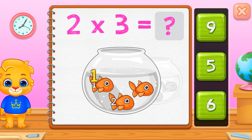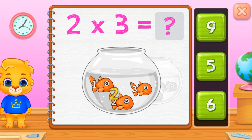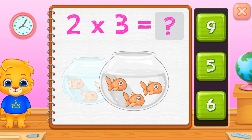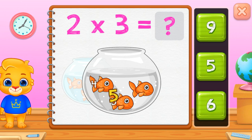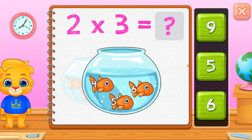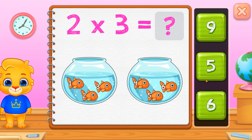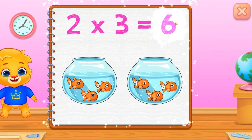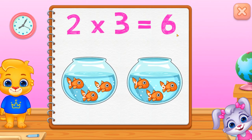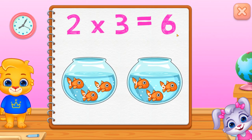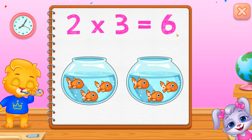One, two, three. Three. Four, five, six. Two times three equals six.